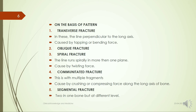Transverse fracture: the fracture line is perpendicular to the long axis; caused by tapping or bending force. Oblique fracture: the line runs obliquely. Spiral fracture: the line runs spirally in more than one plane; caused by twisting force. Comminuted fracture: multiple fragments; caused by crushing or compressing force along the long axis of bone.